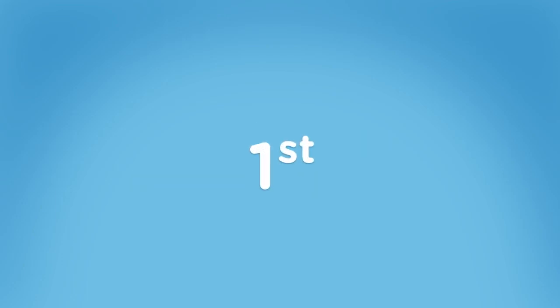Problems detected by the system. The first types of map problems you might encounter are ones that are automatically detected by the system.